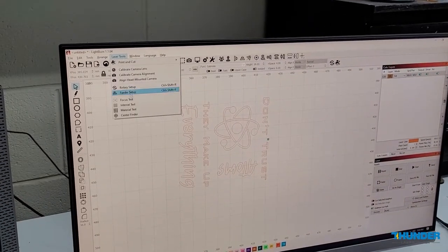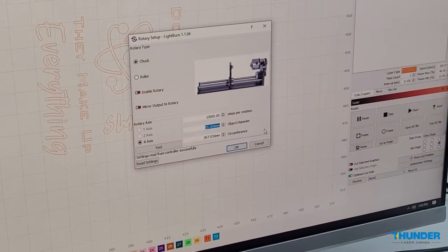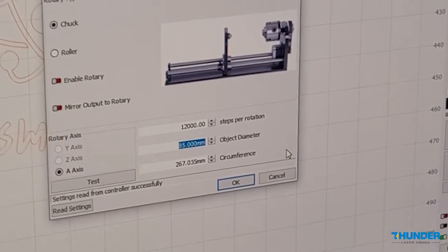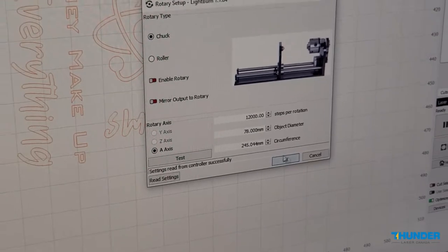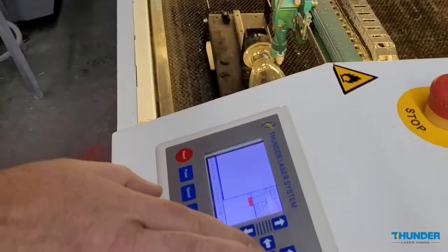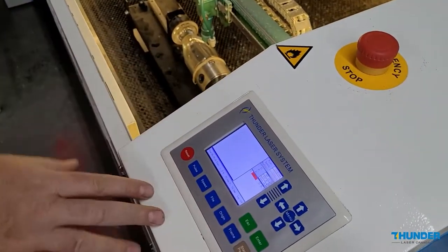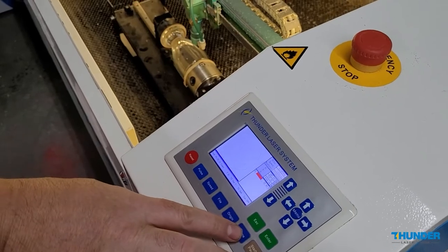I have to go into the laser tools and I'm going to go into the rotary setup here and I'm going to change my object diameter to be the diameter of the glass to what we measured earlier. Right now this object is about 3 inches high. It's 71-72mm high.